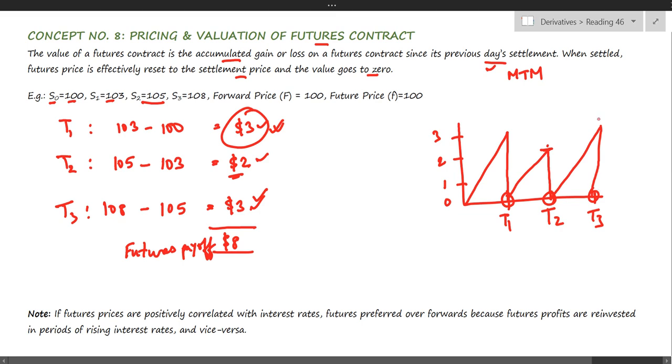This is the meaning of the second statement: once the MTM has been settled, the price is effectively reset to the settlement price and the value goes to zero.